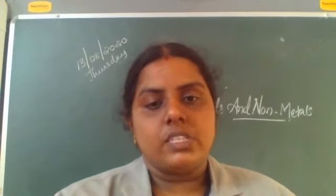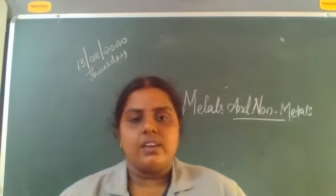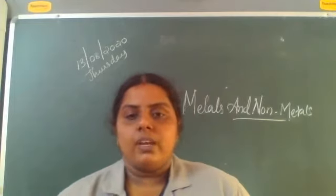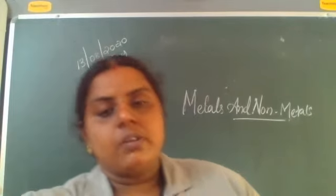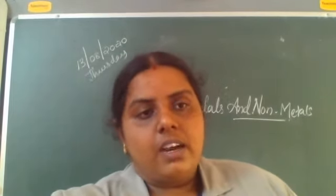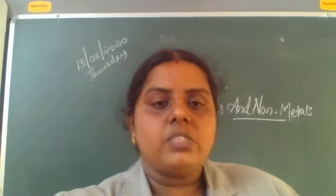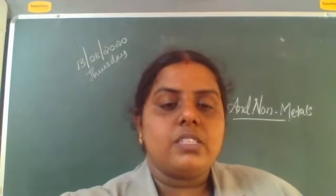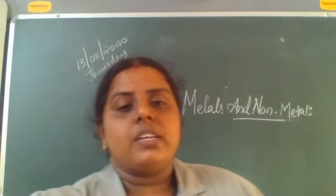The physical properties of metals: first, metals are lustrous, meaning they have a shining surface. Second, metals are generally very hard. Third, metals possess malleability, meaning they can be beaten into thin sheets. Fourth, metals are ductile, meaning they can be drawn into thin wires.